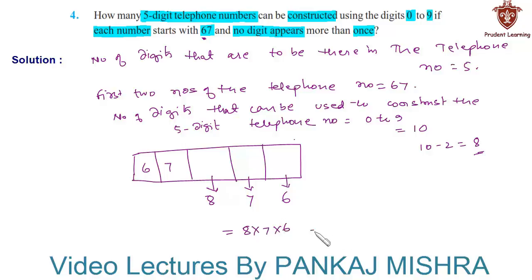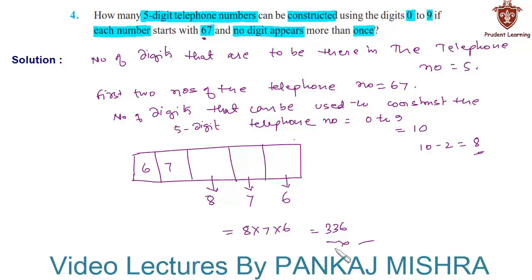That is 336. Hence the number of ways in which five-digit telephone numbers can be constructed using the digits 0 to 9, if each number starts with 67 and no digit appears more than once, is 336. This completes our solution.